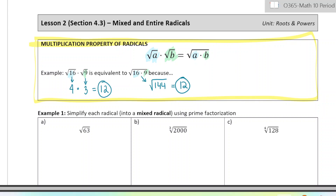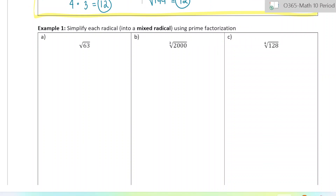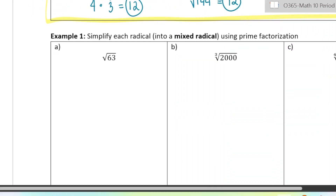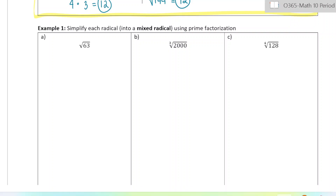First, we're going to be going from an entire radical to a mixed radical using prime factorization. Essentially we're going to be breaking up the number that's underneath the square root, answering the part that we can answer, and then leaving behind any parts that would give us a decimal. So the number 63 — let's start by making a factor tree. 63 can be broken up into 9 and 7, and 9 can be broken down into 3 and 3. So this is the square root of 63.